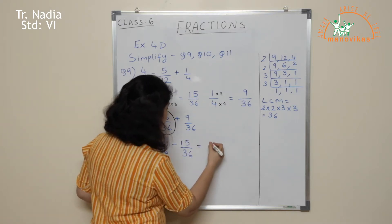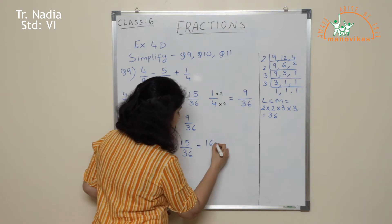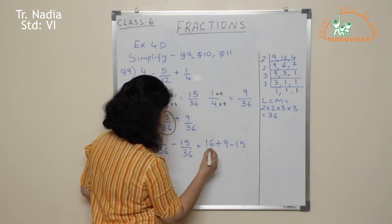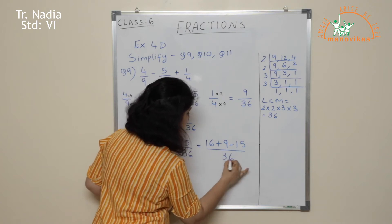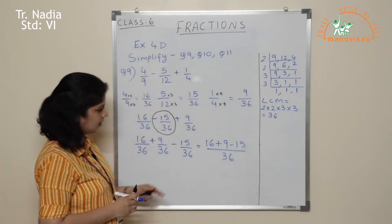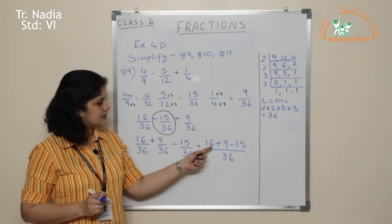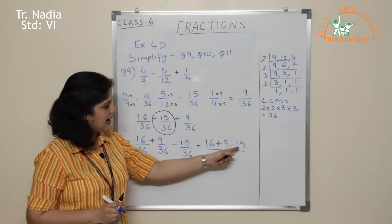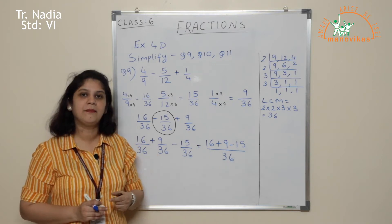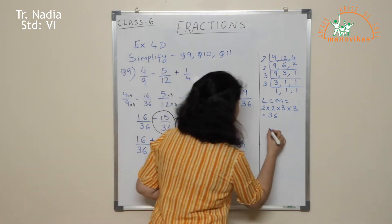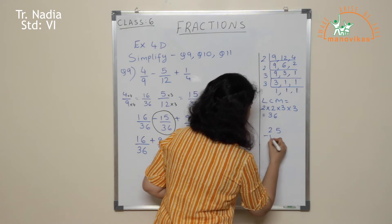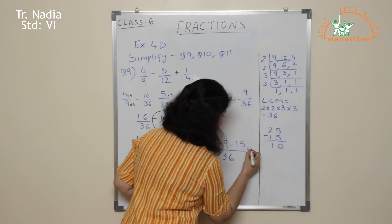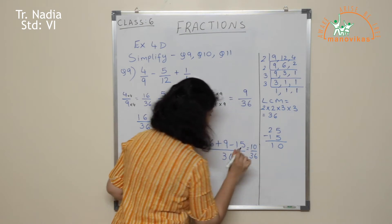These are like fractions, so I just operate their numerators: 16 plus 9 minus 15. The denominator does not change — it remains 36. Now let us operate: 16 plus 9 gives 25, minus 15. What is 25 minus 15? It is equal to 10. So the answer is 10 upon 36.